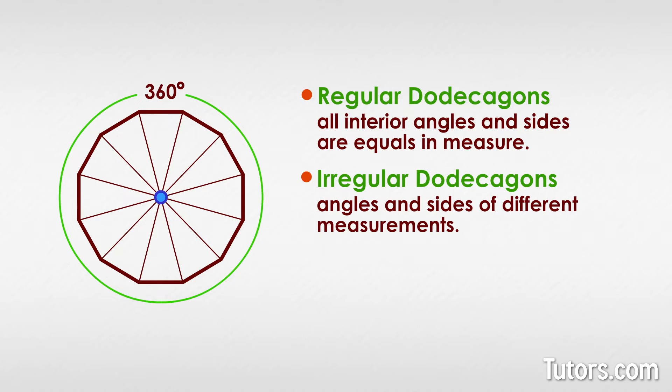That's because to go around the shape, you make a complete circle, 360 degrees. If you divide 360 degrees by the dodecagon's 12 exterior angles, you'll find that each exterior angle of a regular dodecagon measures 30 degrees.